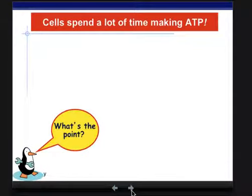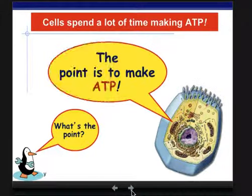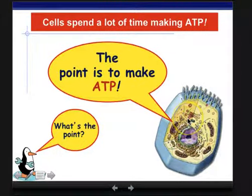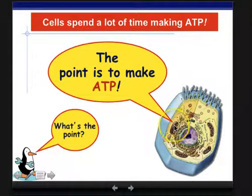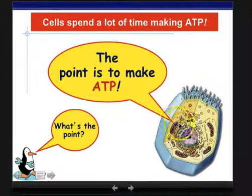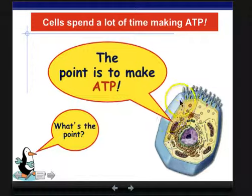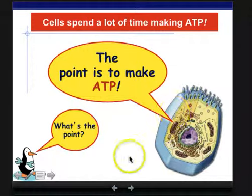Cells spend a lot of time making ATP. That's the big take-home message: cells are pretty devoted to this process. Especially muscle cells have tons of mitochondria; they're spending a lot of time converting glucose into ATP.